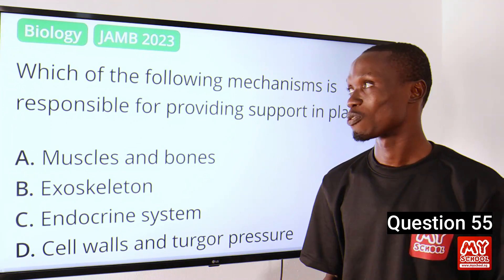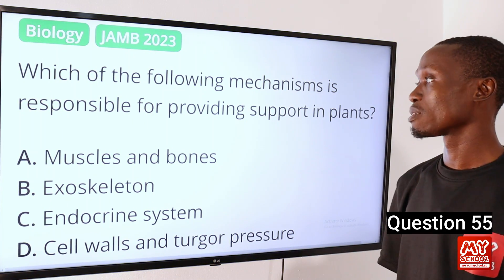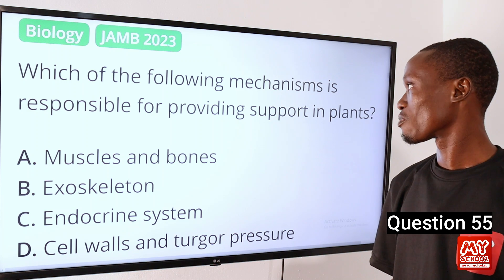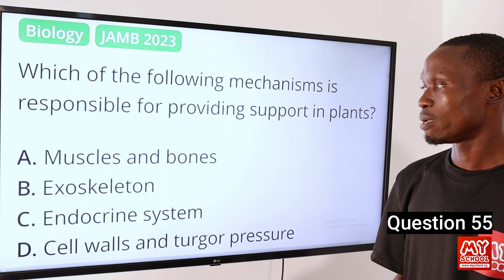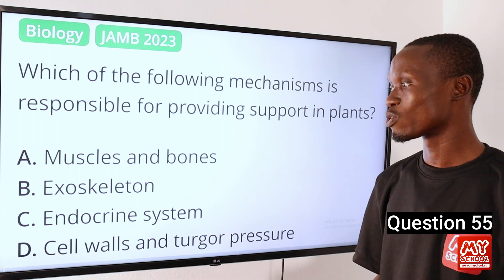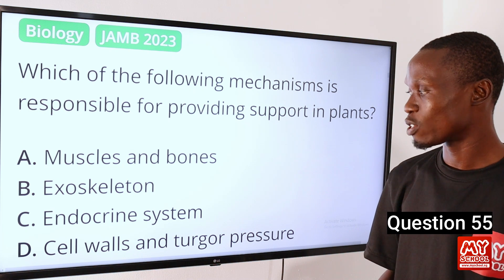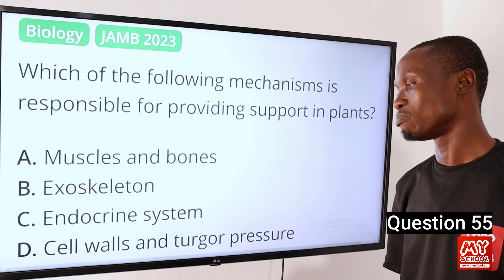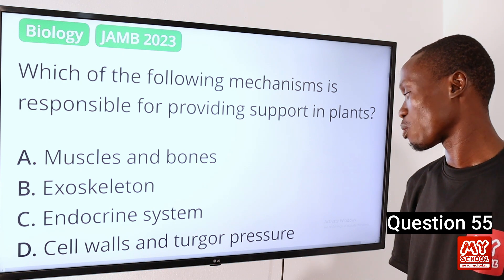Question 55. Which of the following mechanisms is responsible for providing support in plants? A. Muscles and bones. B. Exoskeleton. C. Endocrine system. D. Cell walls and turgor pressure.